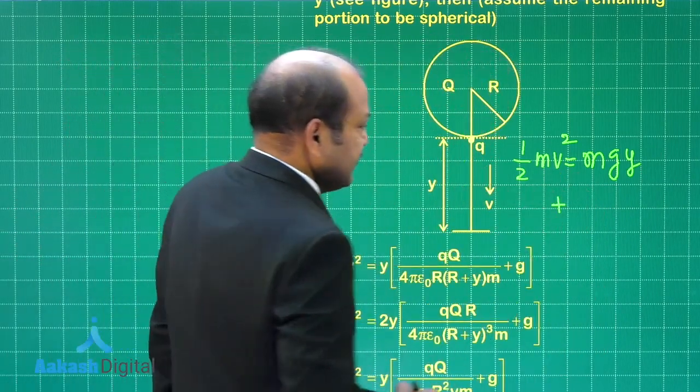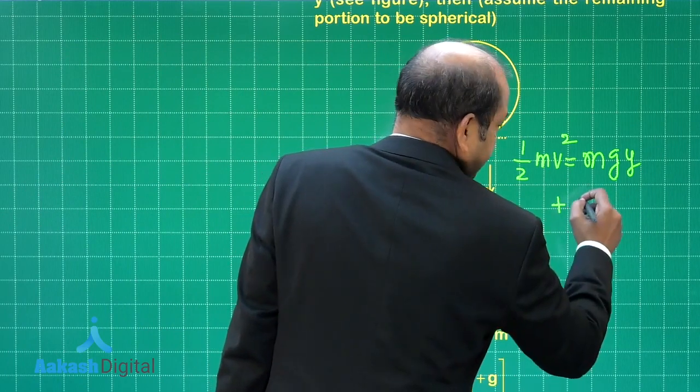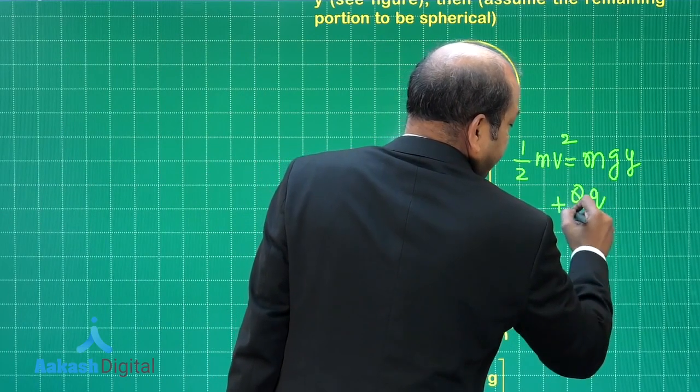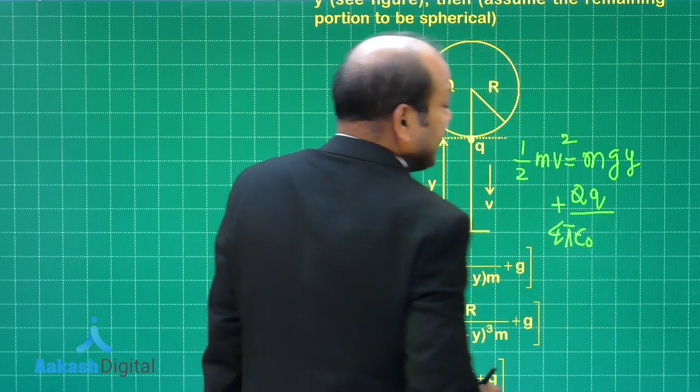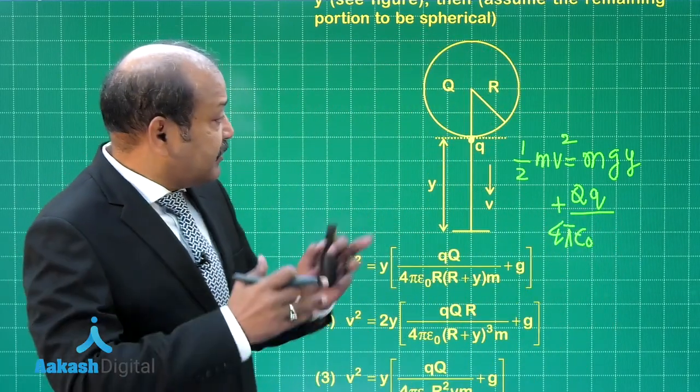What is the expression for that? That is in fact capital Q into small q divided by 4 pi epsilon 0, and then within brackets...